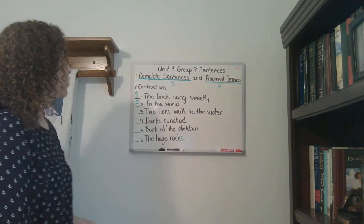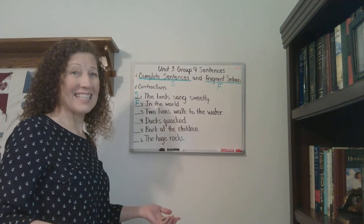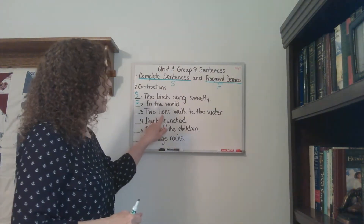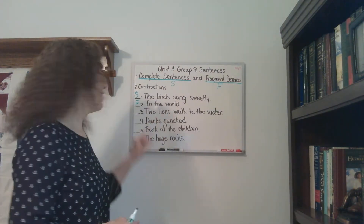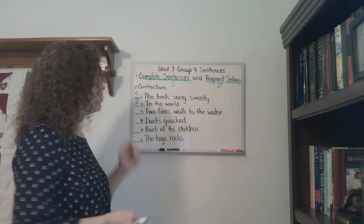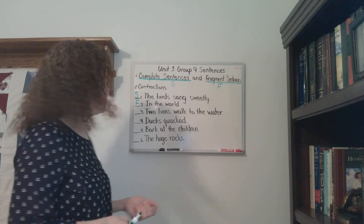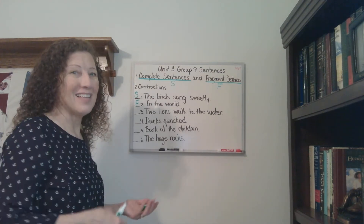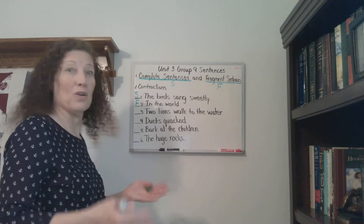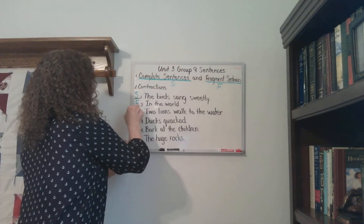Alright, number three: Two lions walk to the water. Is that a sentence? Good job, it is. We have a subject, we have a verb. It makes complete sense. If we say two lions walk to the water, we know what you're talking about. We can picture that in our minds. We don't have questions about what the lions are doing because it answered it. So that is a sentence.